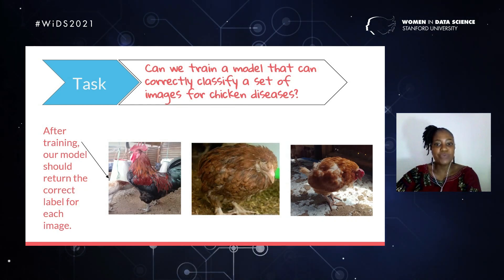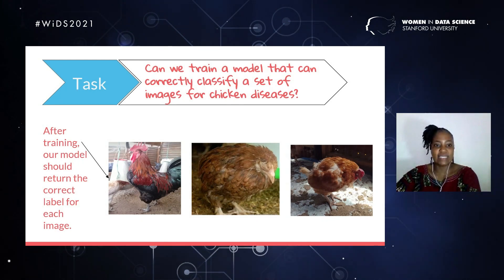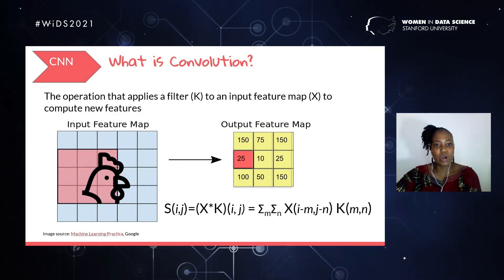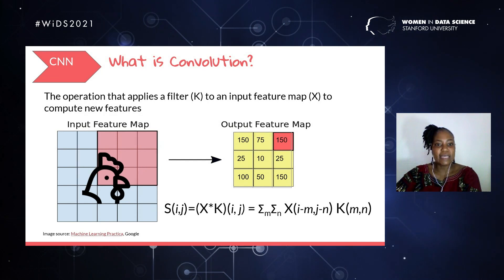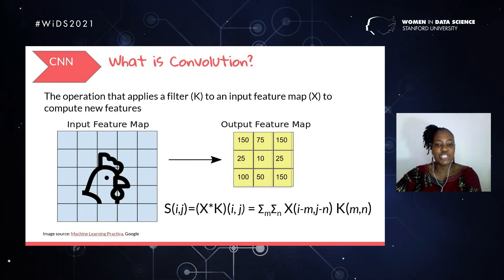The main task at hand is whether we can train a model that can correctly classify a set of images for chicken diseases. These three images represent chickens — two of them are diseased with different kinds of diseases. We aim to return the correct label for each image. This brings us to the power of CNN, which involves the crucial stage of convolution — the operation of introducing a filter K onto a patch of the image Xi, to produce an output feature map, which is a different representation of the main image.